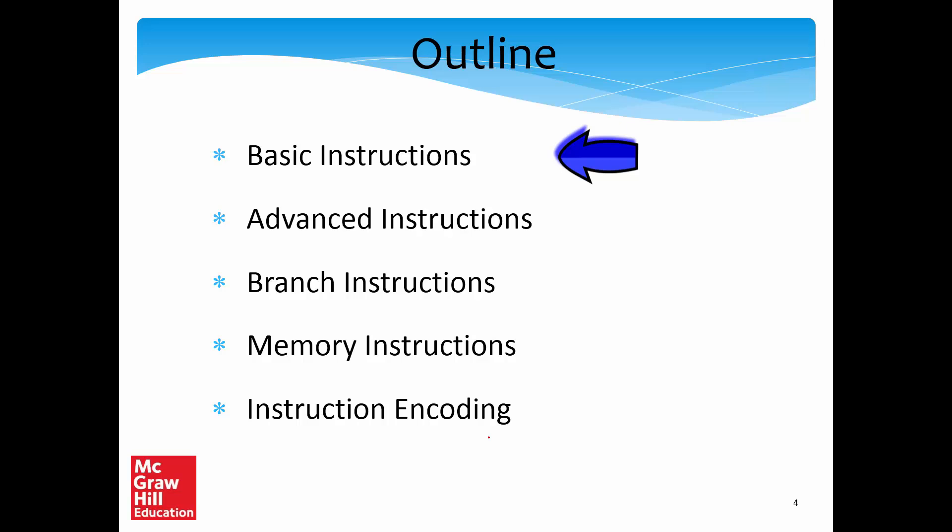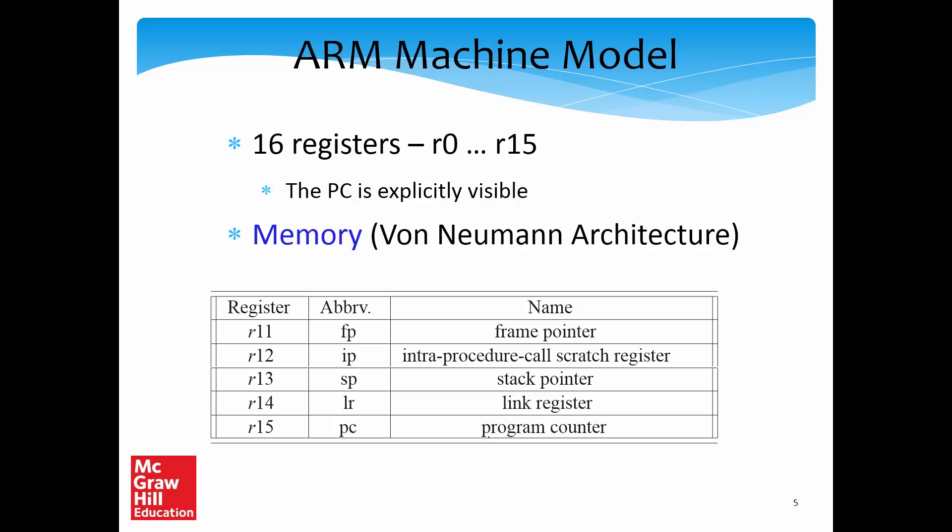We will have five separate sections: basic instructions, advanced instructions, branch instructions, memory/load-store instructions, and finally instruction encoding. Similar to Simple RISC, ARM has 16 registers numbered R0 to R15. Unlike Simple RISC and many other assembly languages, the program counter is explicitly visible and can be used to affect branches. The memory is standard von Neumann architecture, meaning instruction memory and data memory are fused into one.